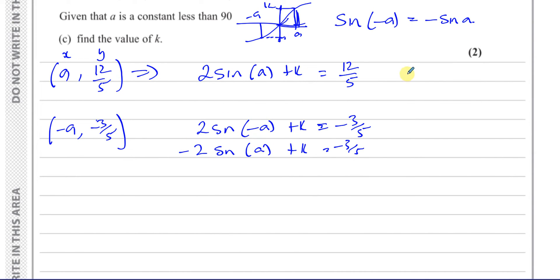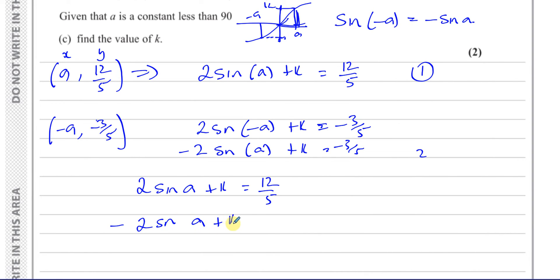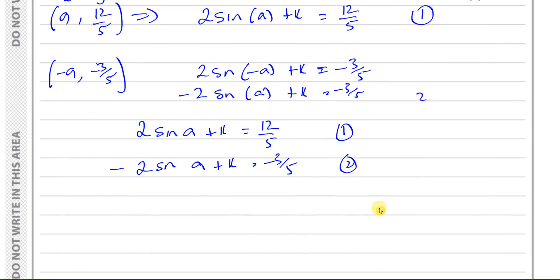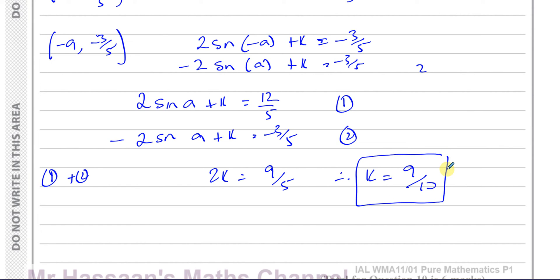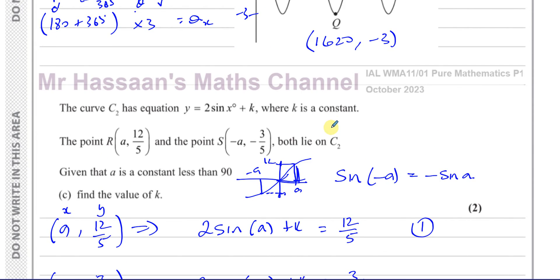Using sin(−a) = −sin(a), we can rewrite the second equation as −2 sin(a) + k = −3/5. So we have two equations: 2 sin(a) + k = 12/5, and −2 sin(a) + k = −3/5. Adding them together, the sine terms cancel out, leaving 2k = 12/5 + (−3/5) = 9/5. Therefore k equals 9/10. That's the answer — a simple question once you spot the key principle.